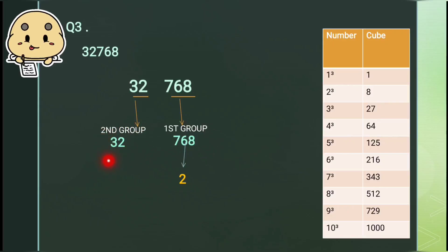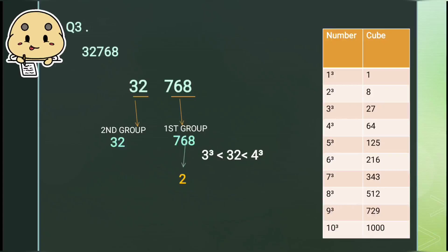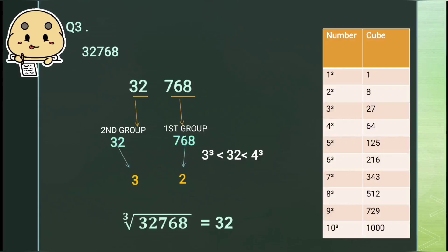Now in the second group we have 32. We get the tens digit from this group. We know that 3 cubed is 27, which is smaller than 32, and 4 cubed is 64, which is greater than 32. So we will take the smaller one. Since 3 cubed is 27, which is closest without exceeding, we take 3. So the cube root of 32768 is 32. Within a short time you will be able to find the cube root of any given number using this estimation method.